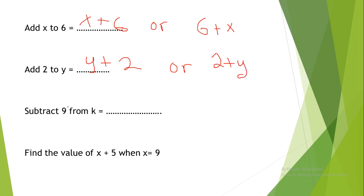Subtract 9 from k. So, the answer would be k minus 9. Find the value of x plus 5 when x equals 9. In this question, you must replace x with 9. So, 9 plus 5 equals 14.